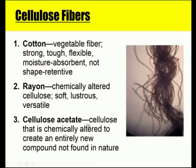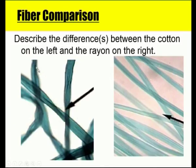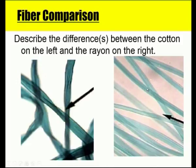Cellulose acetate is chemically altered to create an entirely new compound not found in nature — a modified form of cellulose fiber. A picture comparison shows the differences between cotton on the left and rayon on the right: rayon fibers are very soft, while cotton fiber has a ribbon-like shape compared to the thread-like shape of rayon.